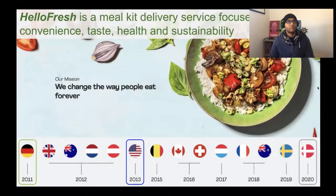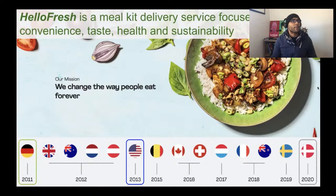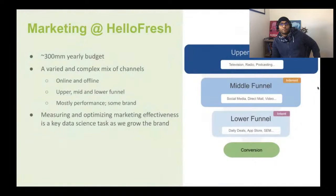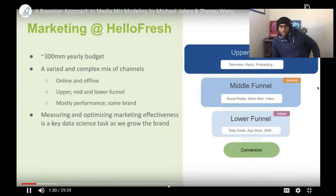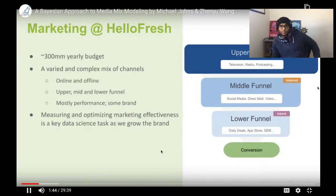HelloFresh is a meal kit delivery service. Customers select the number of meals and recipes they want, and five to seven days later they get a box of ingredients and recipe cards. We currently operate in 14 countries, started in Germany in 2011, launched US operations in 2013, and this year added Denmark. Our yearly marketing budget is about $300 million, involving a complex mix of online and offline channels — from Facebook and Instagram to television and billboards.